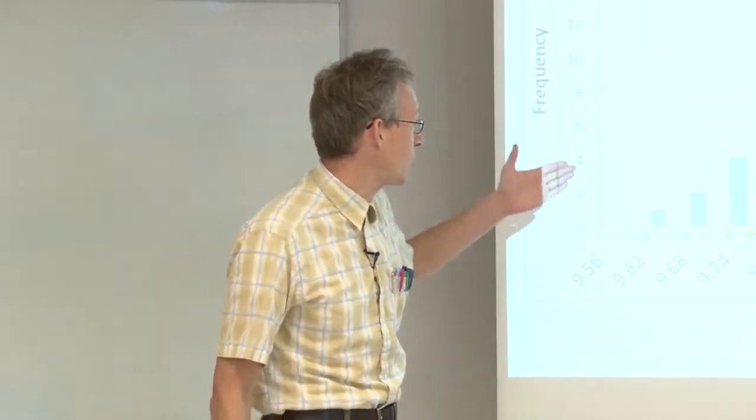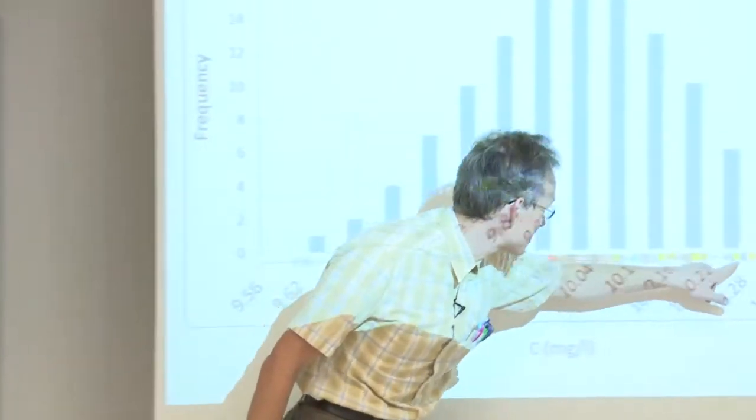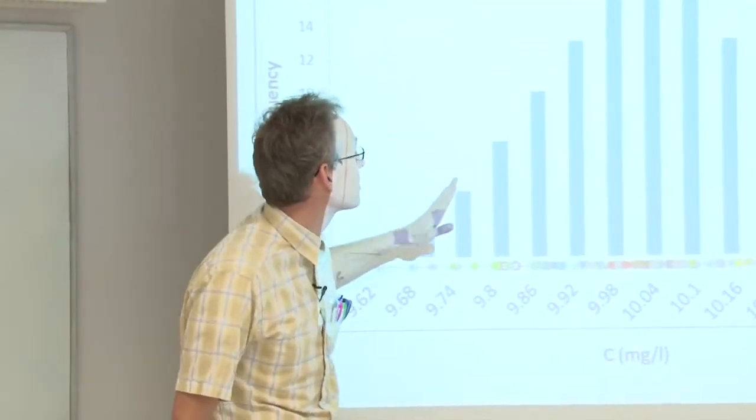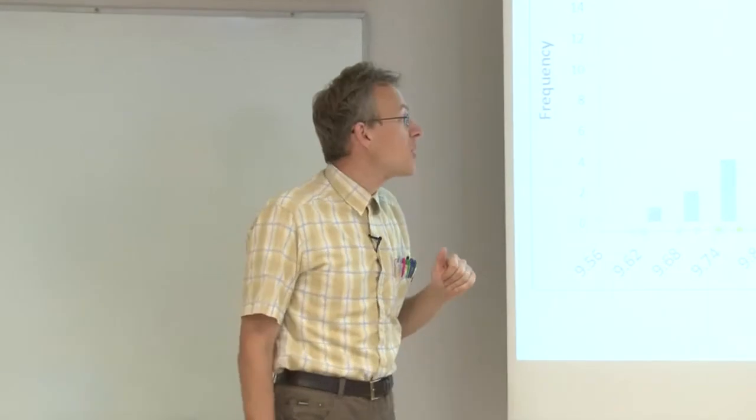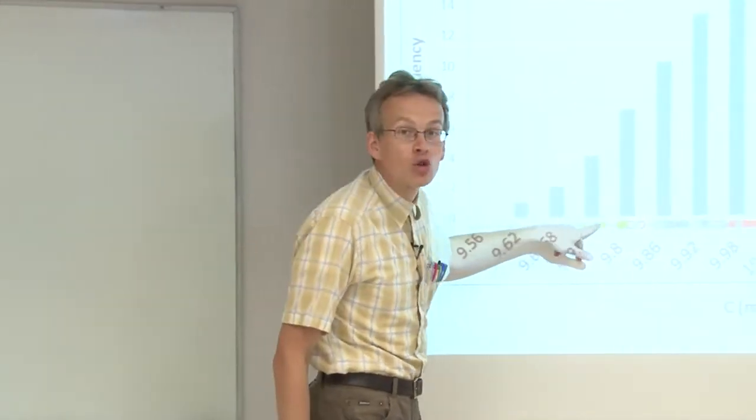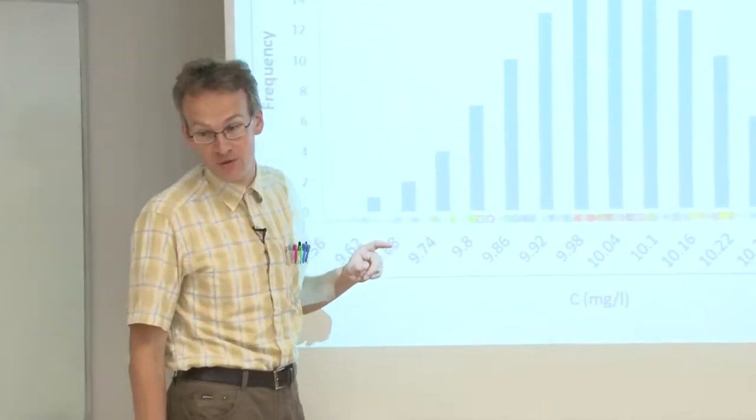If we now look at the histogram that is formed from all these results, then it in fact represents quite nicely the normal distribution function, which means that the systematic effect also gives its contribution into the scatter of the results.